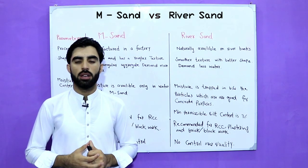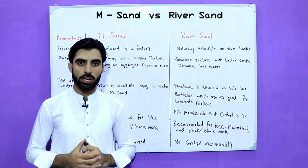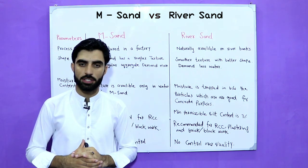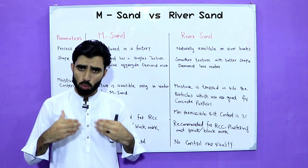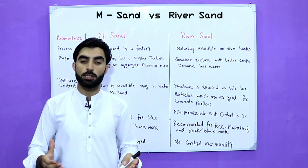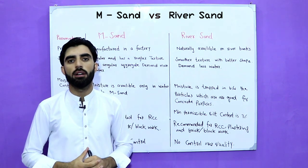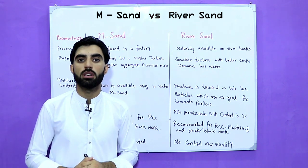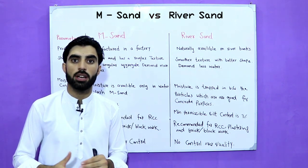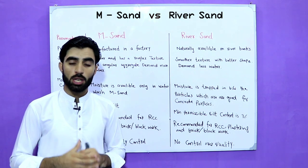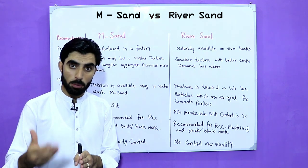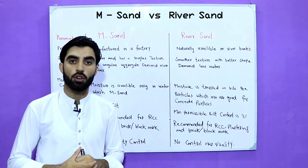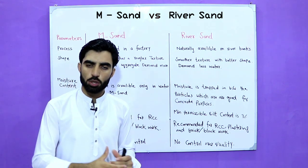Bismillahirrahmanirrahim, Assalamu Alaikum. Today in this important video lecture, I'm going to talk about the main difference between M-sand and river sand. It's very important for you to know the main difference between these two types of sand — the first one is manufactured sand and the second one is river sand. So which one is best for building construction? I will give you some important information for both, and then you can decide which one is the best.